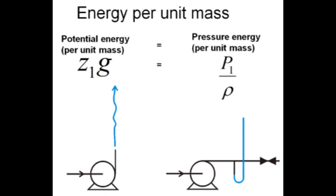The height, the total height of the fountain, would be up to the maximum potential energy. In other words, Z1, or height times g, acceleration due to gravity.